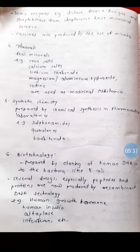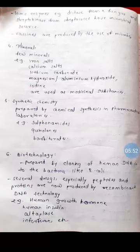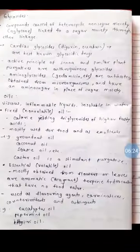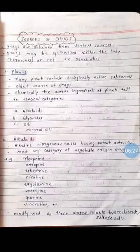The fifth source is synthetic chemistry — drugs prepared by chemical synthesis in pharmaceutical laboratories. Examples include sulfonamides, quinolones, and barbiturates. The sixth source is biotechnology: drugs prepared by cloning human DNA into bacteria like E. coli. Several drugs, especially peptides and proteins, are now produced by recombinant DNA technology. Examples include human growth hormone, HCG, human insulin, interferon, monoclonal antibodies, and erythropoietin.